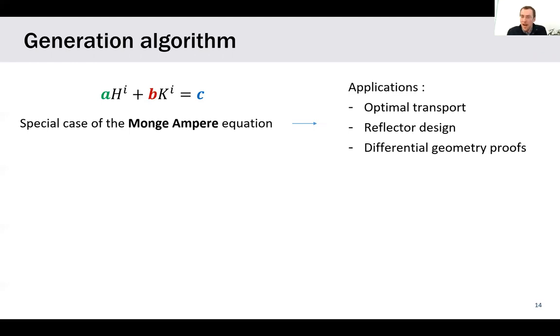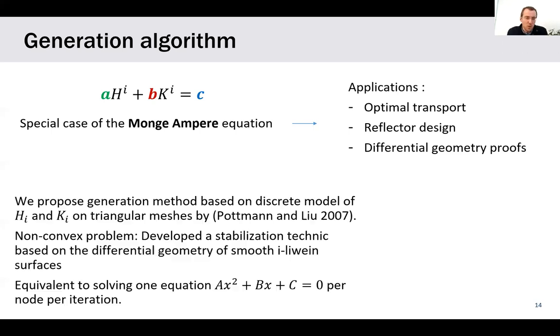It's quite complex to solve, highly non-linear, you don't have variational principles. It's hard to prove the existence and uniqueness on non-convex boundaries, not always possible. There are some generation methods for the general case, but that are quite complex. So we use the fact that we have a simple case of this equation to propose a generation method based on a discrete model, based on discrete differential geometry, on triangular meshes, models proposed by Pottmann and Liu to describe the isotropic mean and Gaussian curvature of a triangular mesh. It's still a non-convex problem. So we have to develop numerical tricks based on differential geometry, something we won't go into in this presentation. You have the details in the paper.